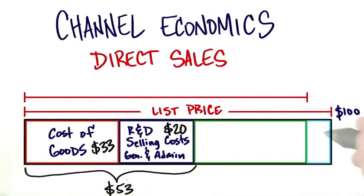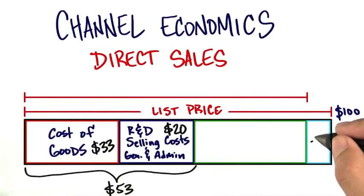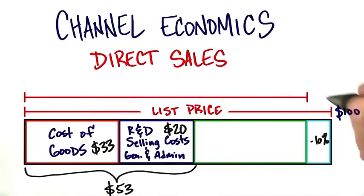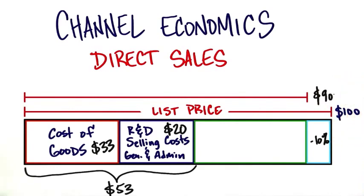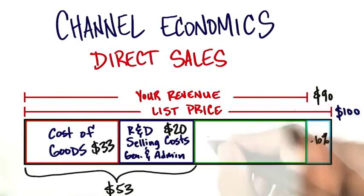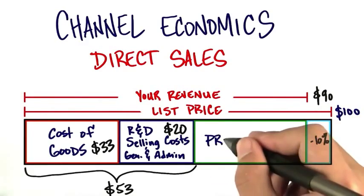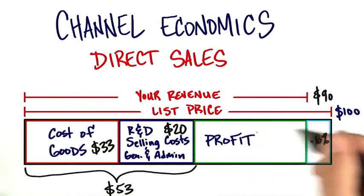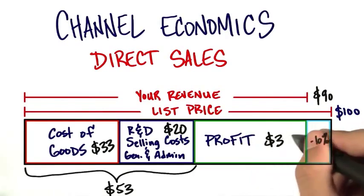Now something we should consider is that no end user pays list price. So let's assume that this area represents a discount from the list price — let's say 10%. That means your revenue to your company would not be $100 but $90. So wait a minute: you're getting $90 but you spent a total of $53 building the product and keeping the lights on. That leaves right in the middle how much profit you have — in this case, it would be $37.